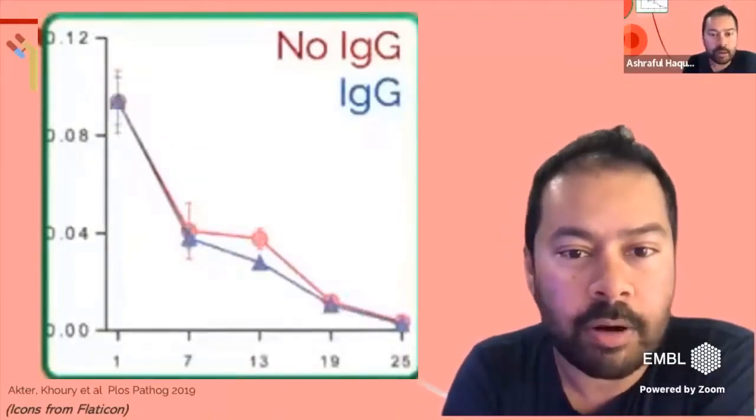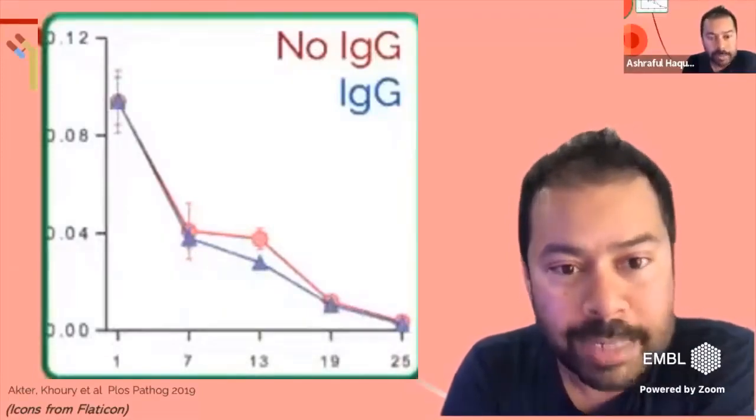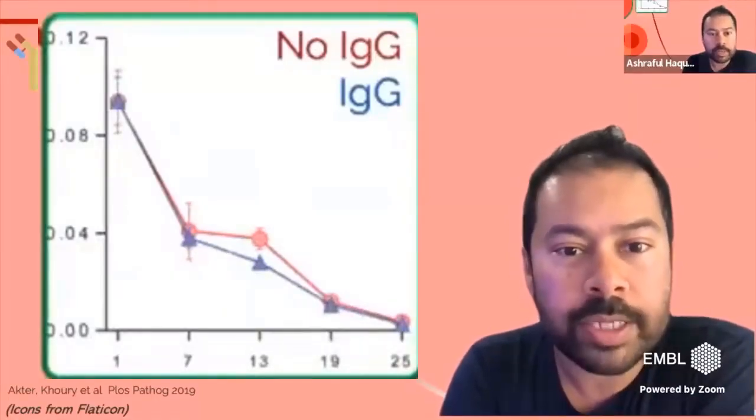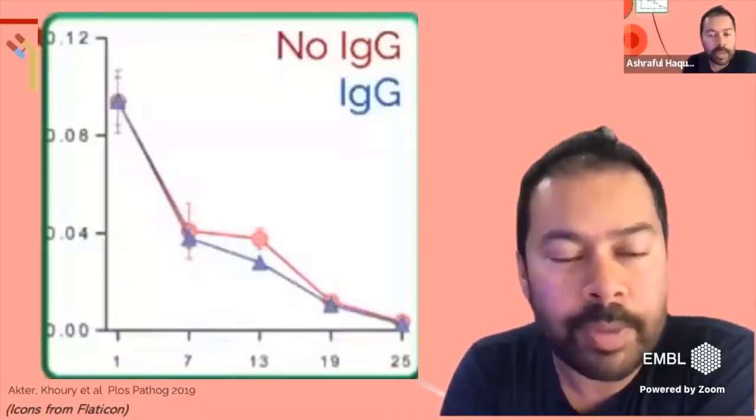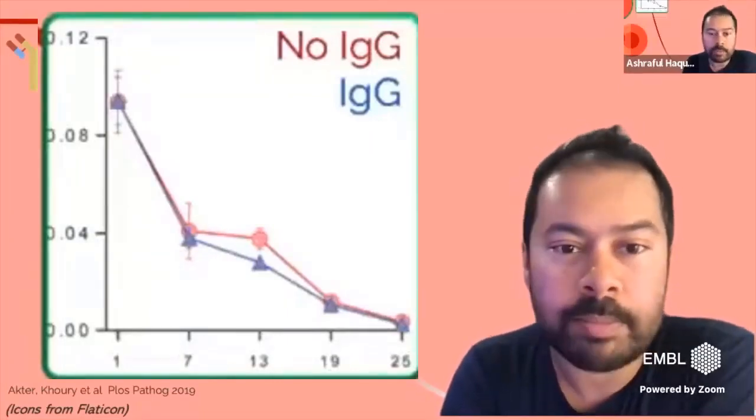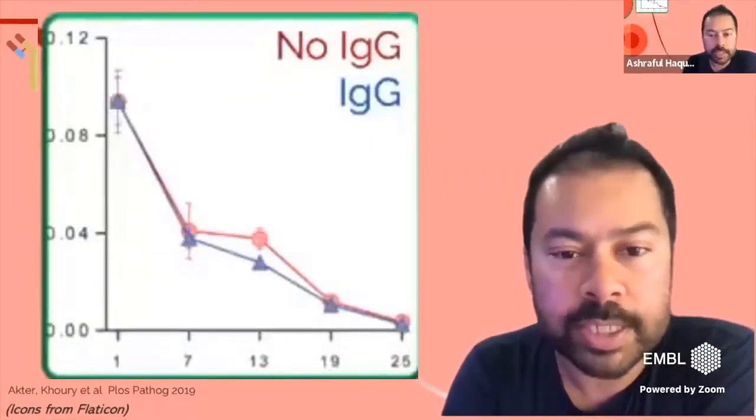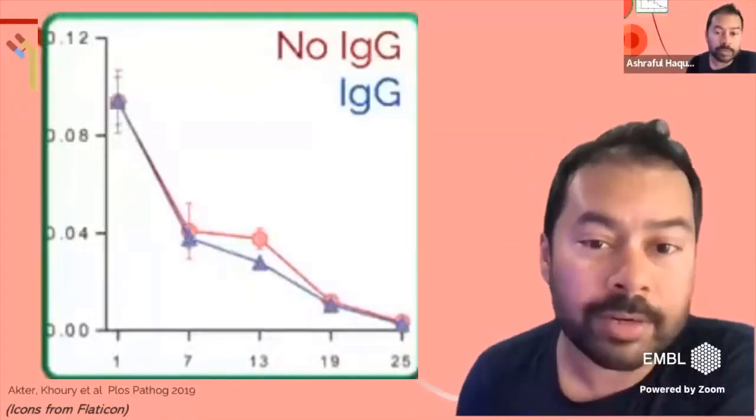Well you can see in this graph where we watch the cohort of green red blood cells labeled generation zero that in the presence or absence of immunoglobulin has no impact on the rate at which we lose those red blood cells either through bursting and infection, infecting new red blood cells, or clearance by the host.